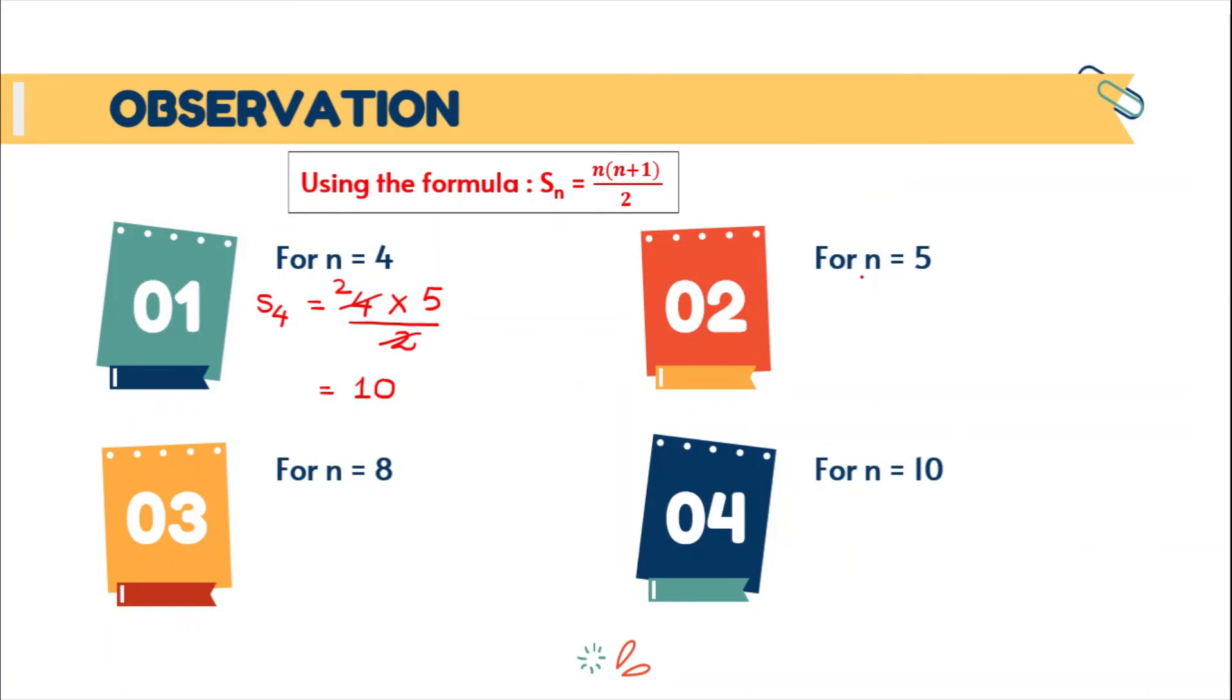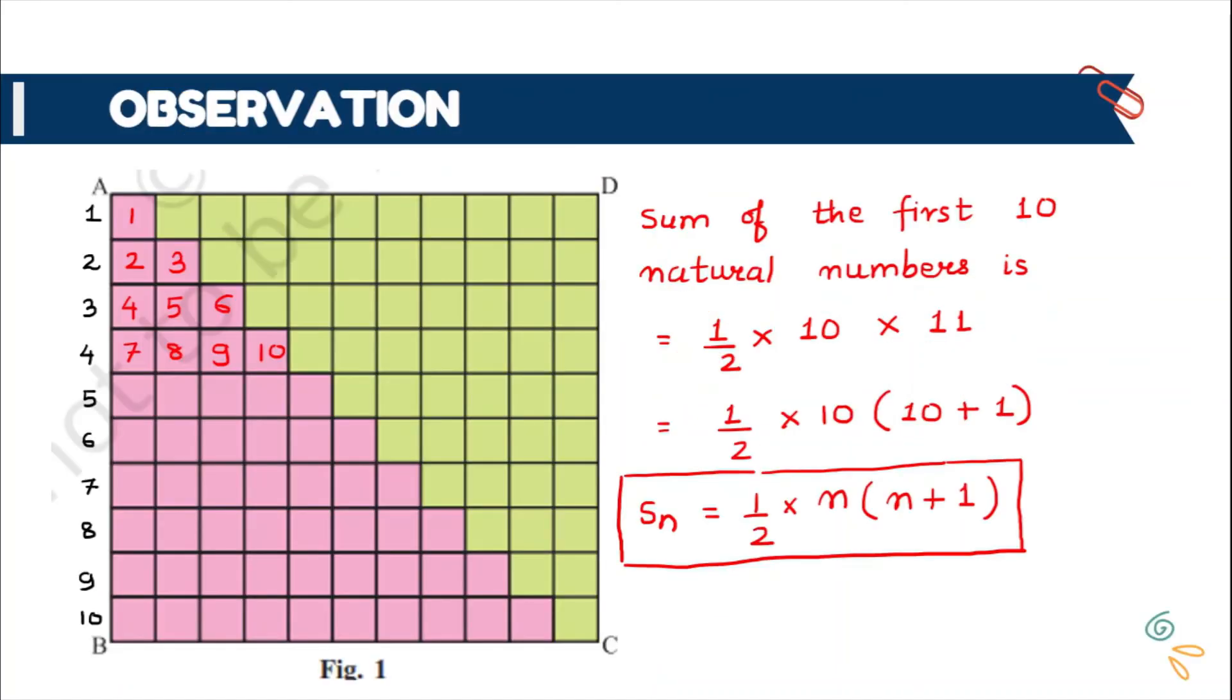Now for n equal to 5, that is sum of first 5 natural numbers will be 5 into (5 plus 1) which is 6, divided by 2. This will give me 15. Again, you can cross check it here. So up to 4th stair, the sum is 10. Then 11, 12, 13, 14 and 15. I hope you all are understanding the concept.